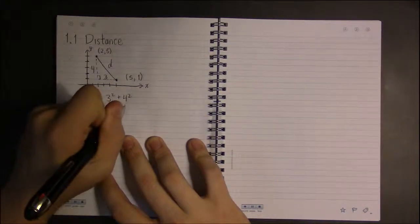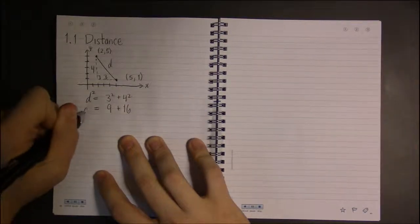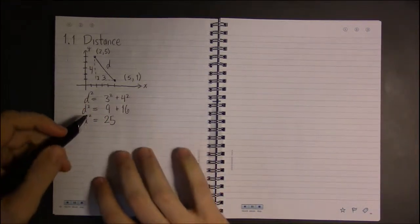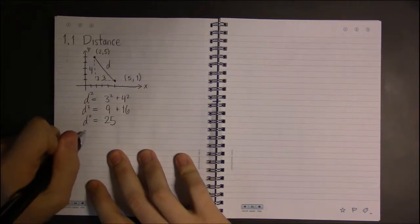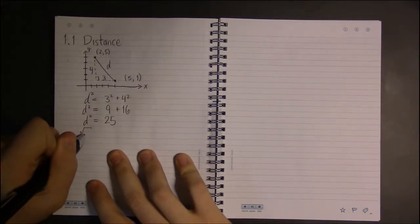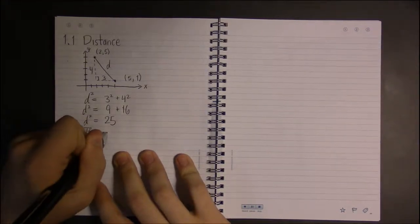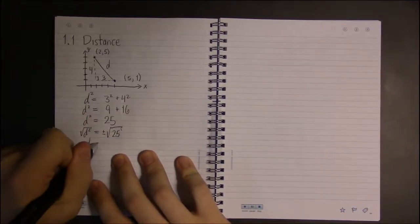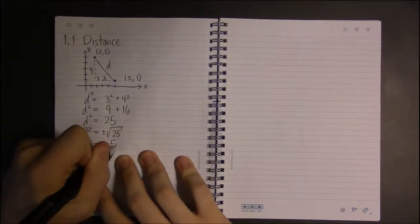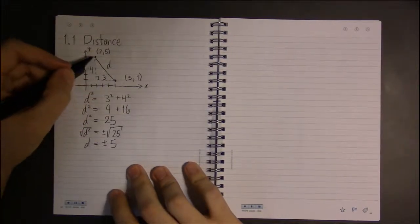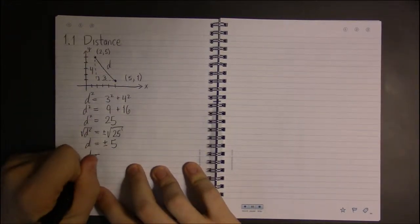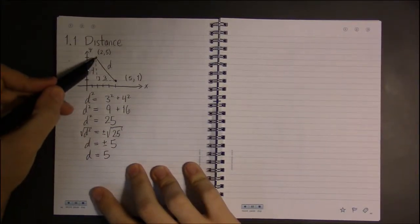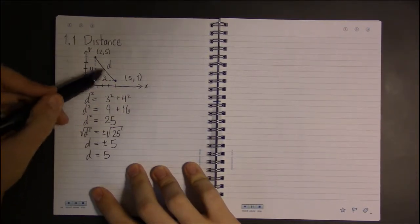So doing the computation, we have that if we take square roots of both sides. And in this case, to be thorough, we'll go ahead and put plus or minus. But really, we're not going to consider the negative answer because distances should be positive. So the distance between these two points is just 5. To walk from this point to this point means you're walking a total of 5 units.